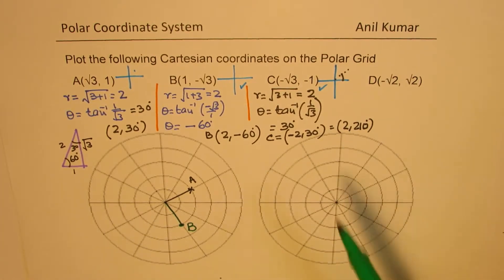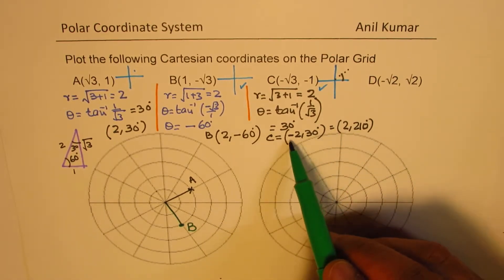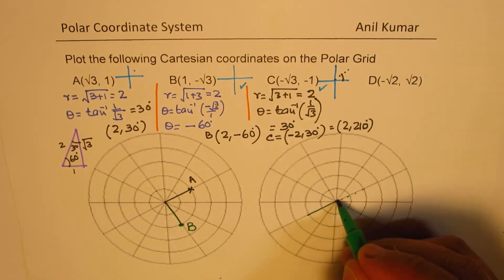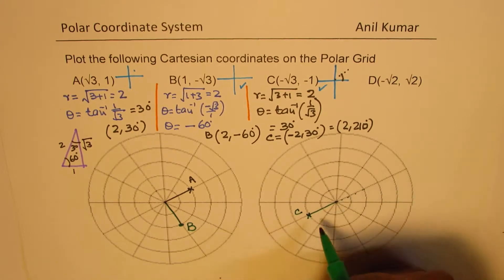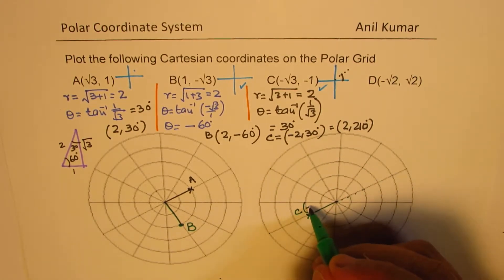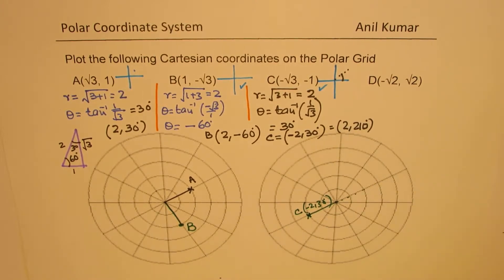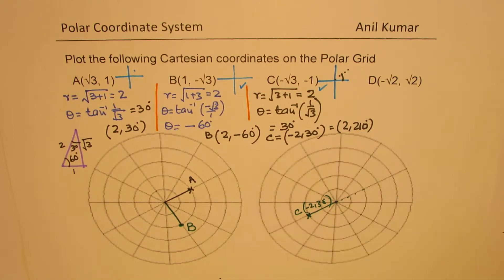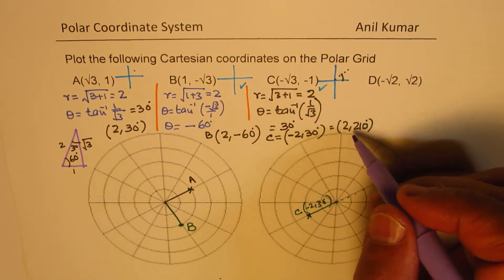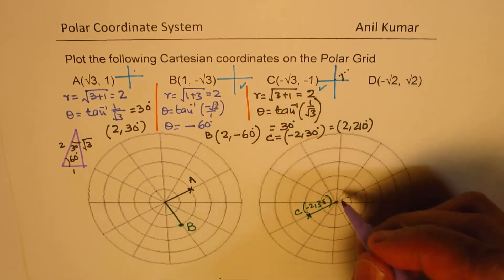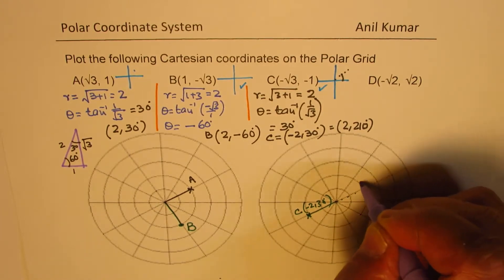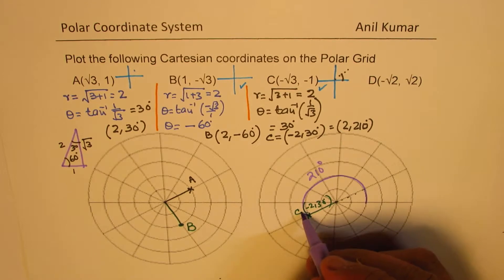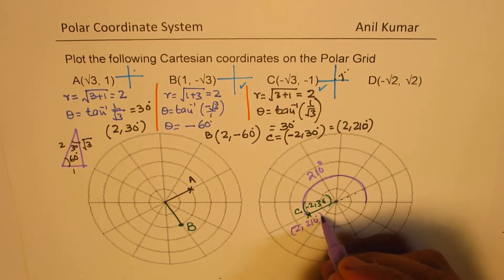Let's see how to plot this value. If you go with (-2, 30°), you go to the 30-degree line but r = -2 points in the opposite direction, giving point C. That becomes (-2, 30°). On the other hand, we can keep r = 2 positive, go all the way to an angle of 210 degrees, and take 2 units — we again get the same point C, now written as (2, 210°).